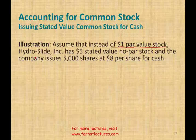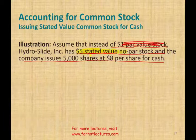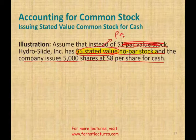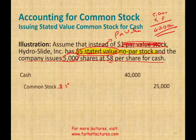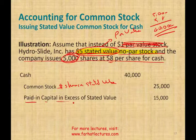Now assume instead of $1 par value, Hydro Slide has a $5 stated value with no par, and the company issues 5,000 shares at $8. Every time you hear 'stated value,' you can substitute it with par value — it's the same thing. The company receives $40,000 cash. We credit common stock for number of shares times stated value: 5,000 × $5 = $25,000. Anything left is paid-in capital in excess of stated value — basically the same concept, just different terminology.